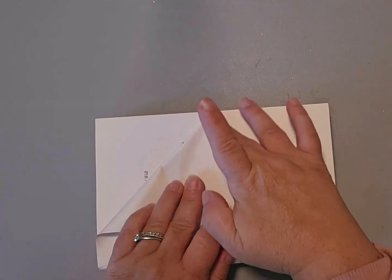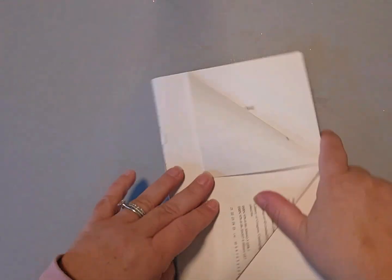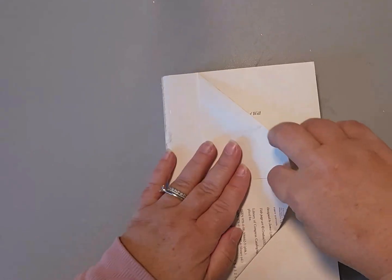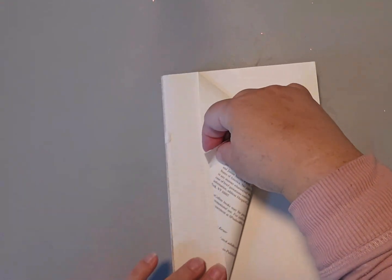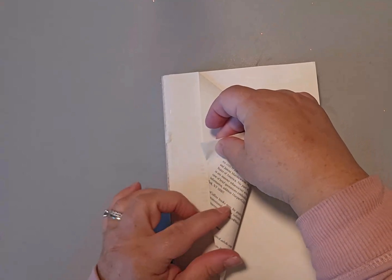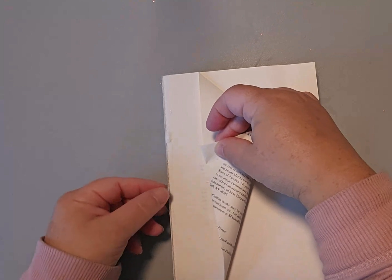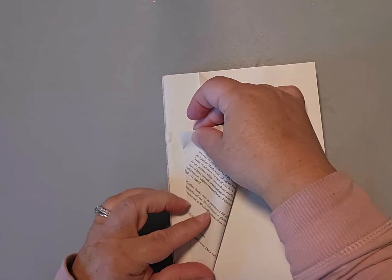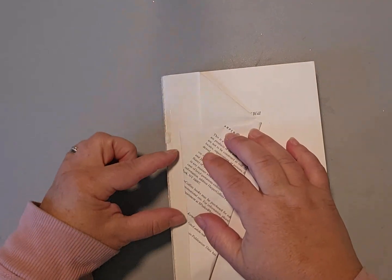Step two is then you're going to take this triangle and bring it up, and then you're going to fold that probably about a centimeter away from the gutter. You want to leave this space here.